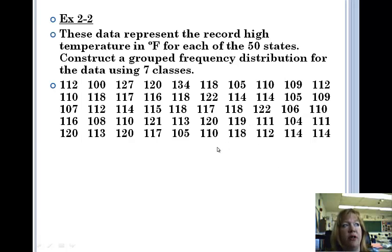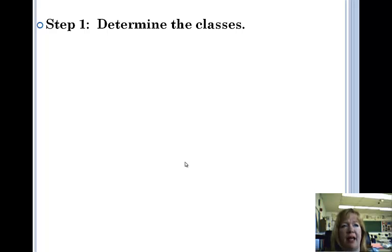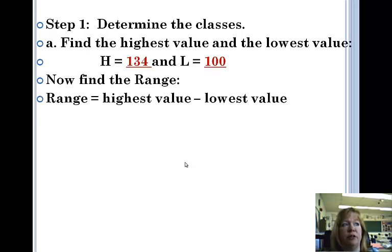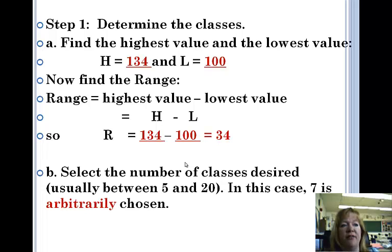Here's a whole bunch of data about temperature in the 50 states. They say construct a grouped frequency distribution for the data using seven classes. They tell you how many classes there are, chosen arbitrarily, because that's up to the researcher. So if we take this data, we're going to determine the classes. They already told us we have seven. You take the highest and the lowest value and subtract them. So you've got 134 and 100, those are the high and the low. You subtract them to find the range, 134 minus 100, and then divide by the number of classes.